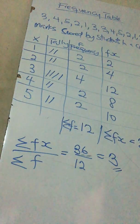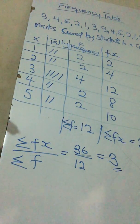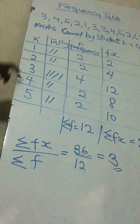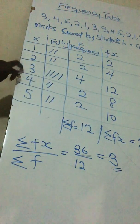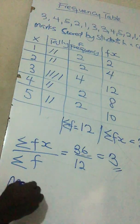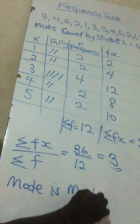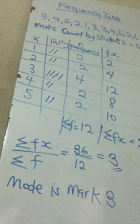What if you are told to find the mode? The mode is the most frequently occurring value. Looking at the frequency column, which value has the highest frequency? You can see it is 3, which has a frequency of 4. So the mode is mark 3.